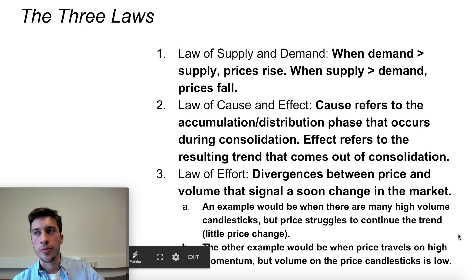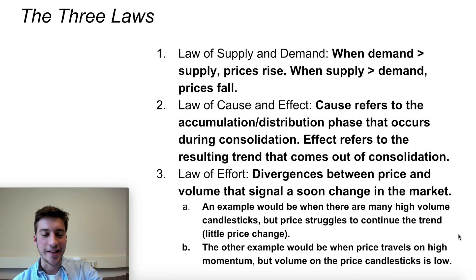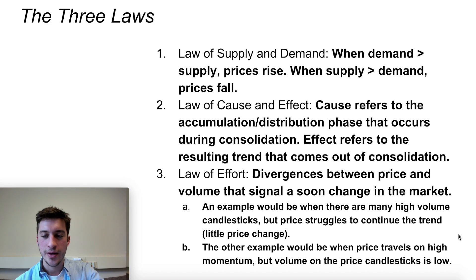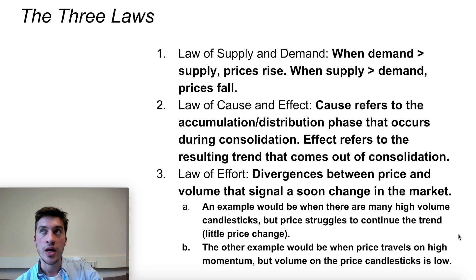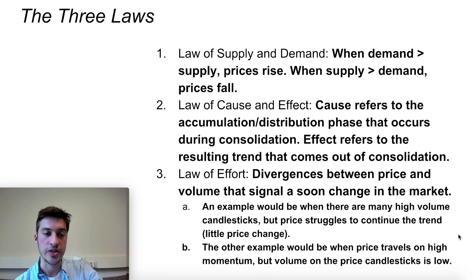Let's do a quick recap on what we went over for part one of Wyckoff trading theory. We went over the law of supply and demand, which is pretty intuitive. Then we went into two laws that are a little bit less intuitive: the law of cause and effect — cause refers to the consolidation phase and how that turns into a trend, where you're going to see either distribution or accumulation of big market players like market makers, institutions, and HFTs, accumulating or distributing positions with limit orders while retail takes the opposite side. And finally, the law of effort, which is looking at candlestick momentum and volume and comparing those two.